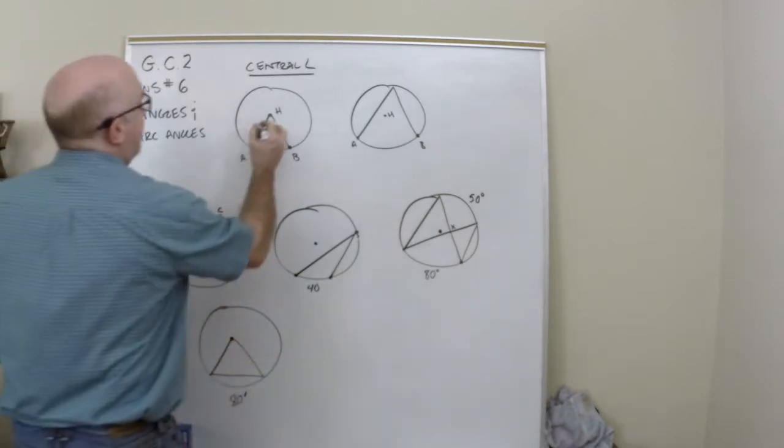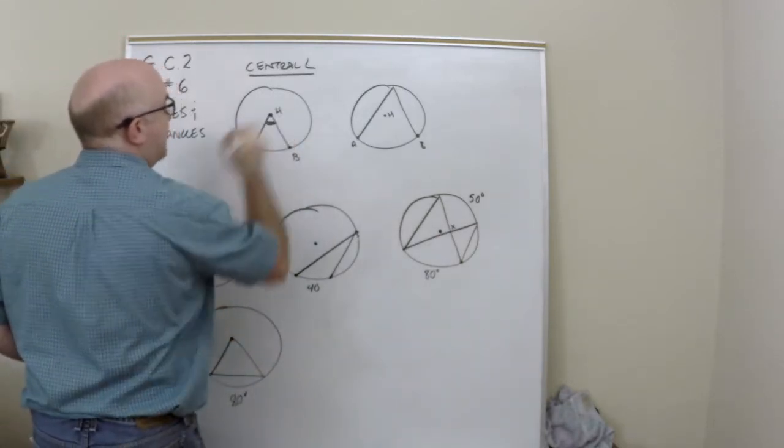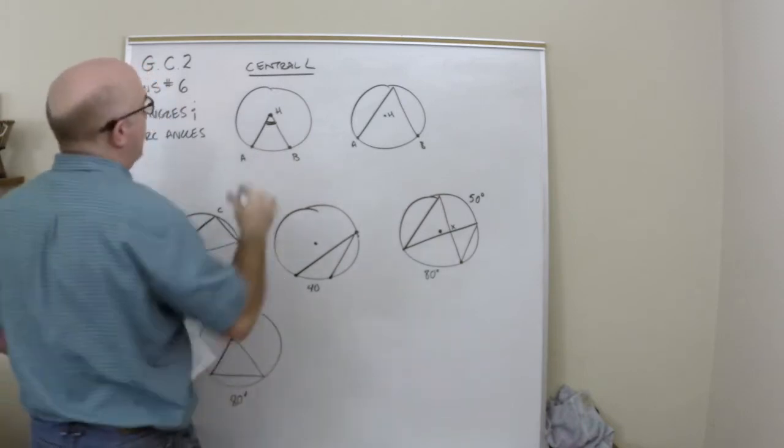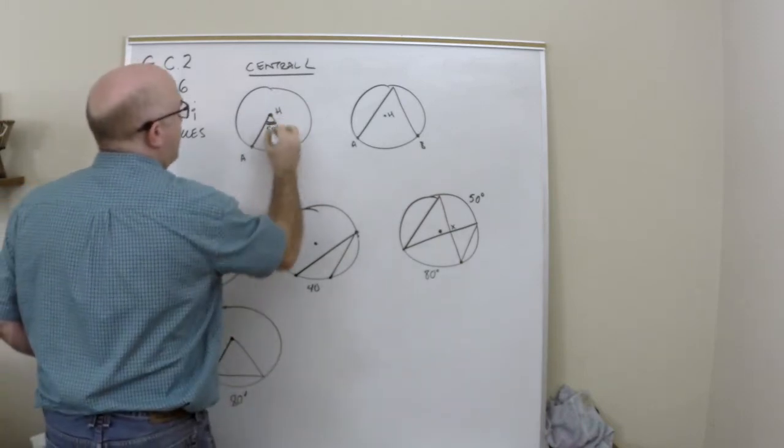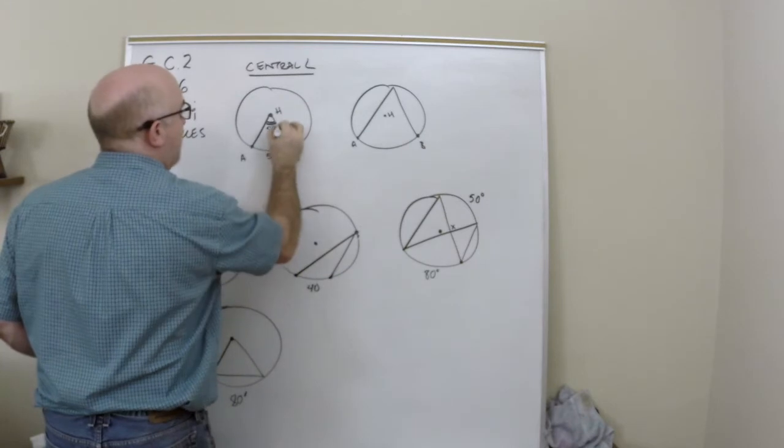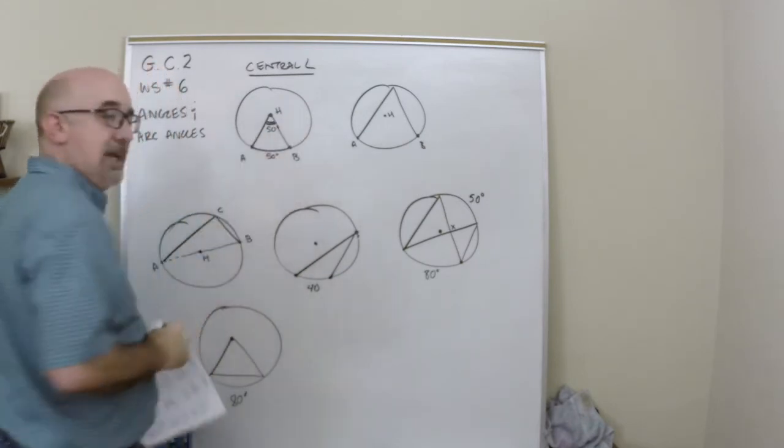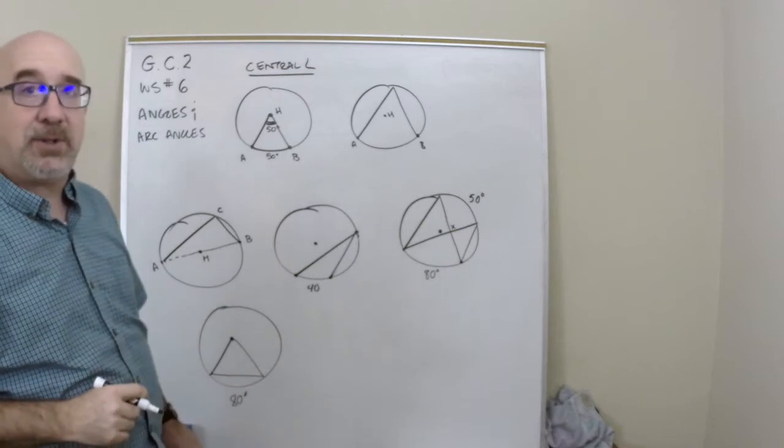So the central angle of course has a vertex at the center. We've already learned that whatever it is, if it's 50 degrees, then it's 50 degrees out here as well. The arc angle always equals the central angle.